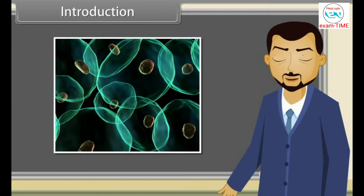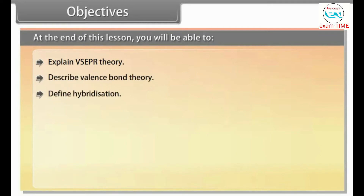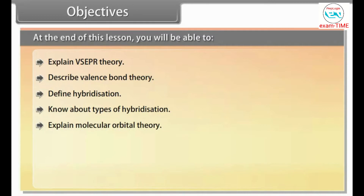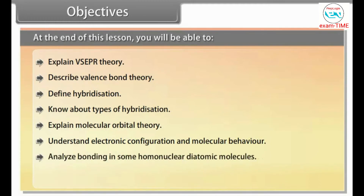Today we will study more in our chapter Chemical Bonding and Molecular Structure. At the end of this lesson, you will be able to: explain VSEPR Theory, describe Valence Bond Theory, define Hybridization, know about types of hybridization, explain Molecular Orbital Theory, understand Electronic Configuration and Molecular Behavior, analyze bonding in some homonuclear diatomic molecules, and define Hydrogen Bonding.